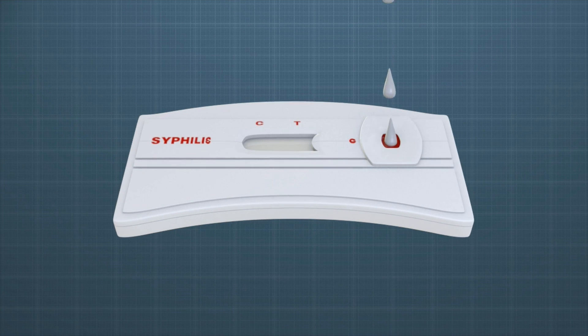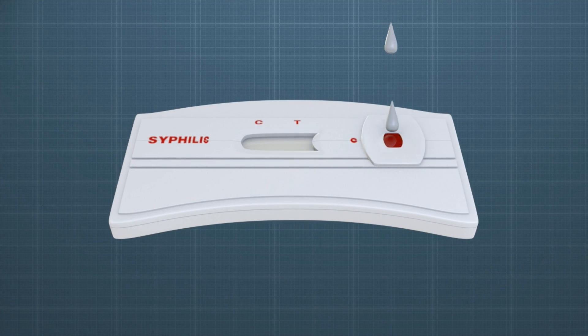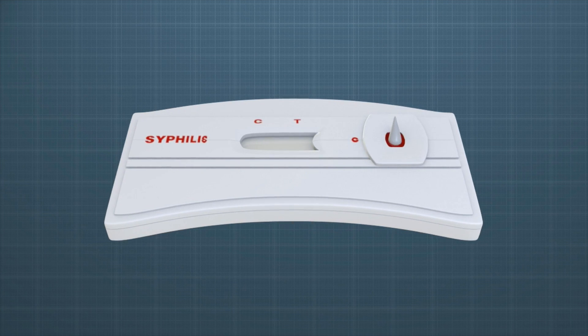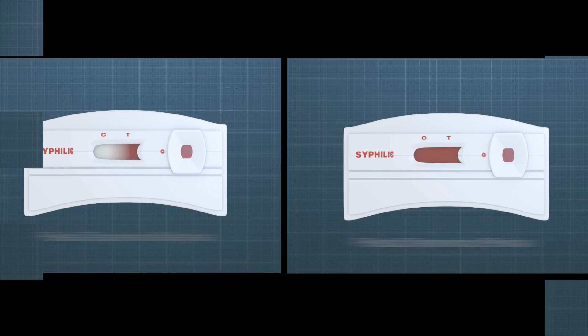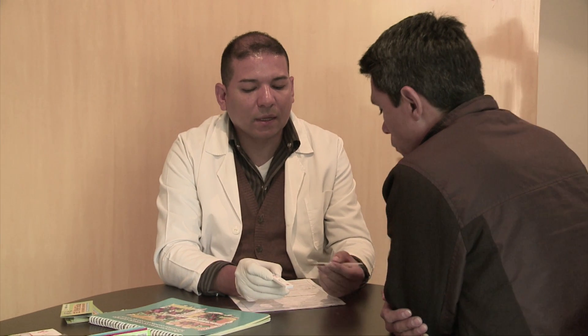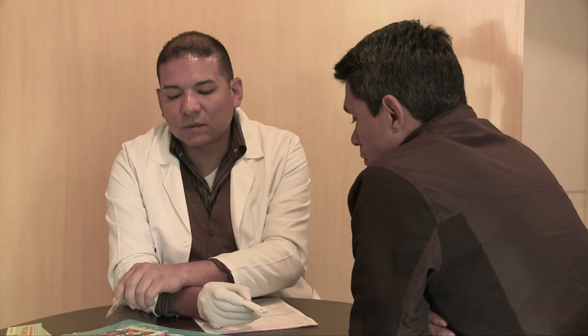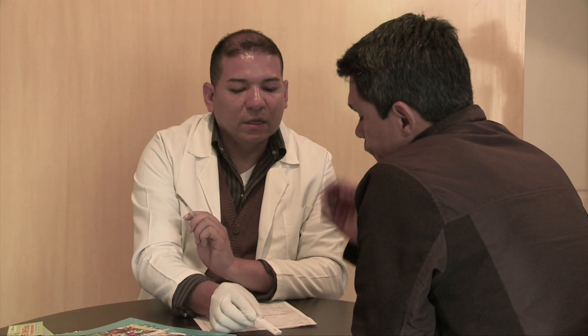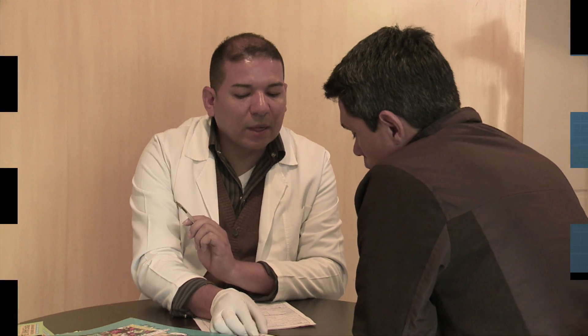Resultados de las pruebas rápidas de sífilis: se reporta como prueba treponémica positiva o negativa. En caso de un resultado positivo en la prueba treponémica, se debe iniciar tratamiento y realizar seguimientos posteriores con pruebas no treponémicas.